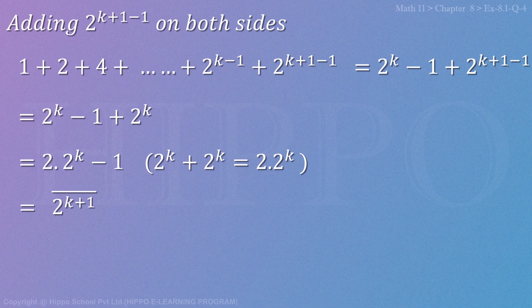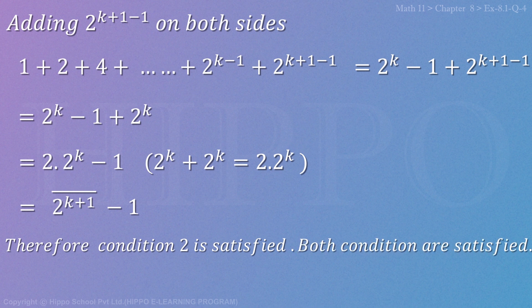This equals 2^(k+1) - 1. Therefore Condition 2 is satisfied. Both conditions are satisfied, hence S(n) is true for every positive integer.